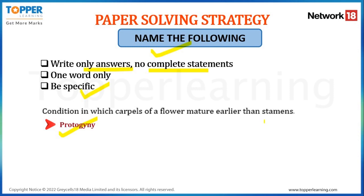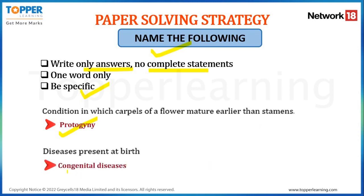Protoandry is a condition in which the stamens of a flower mature earlier than the carpels. One more example: diseases present at birth. The diseases which are present at birth are called congenital diseases. Here you can see that there are two terms involved — congenital and diseases — so you are expected to write 'congenital diseases' as the right answer.